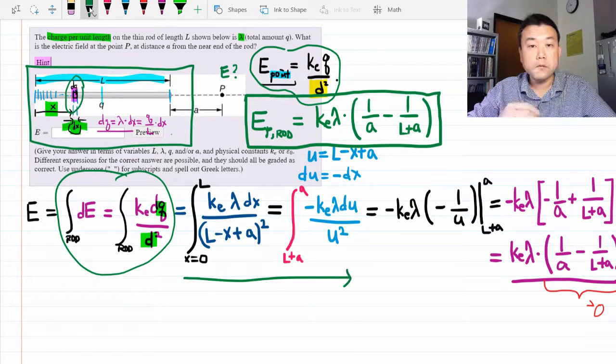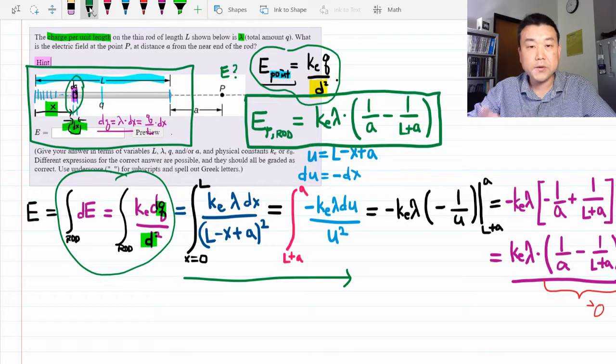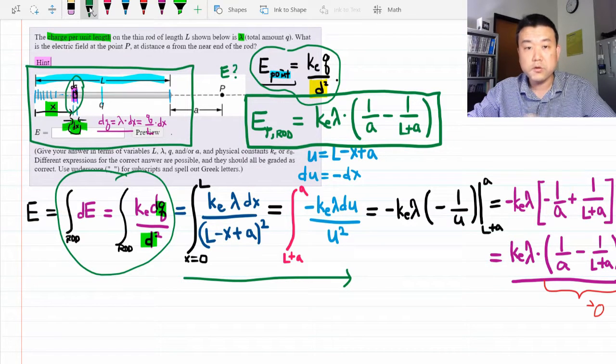of taking a charge distribution, breaking it up into tiny little pieces where you can apply Coulomb's law and setting up the integral and actually carrying out the integral. For this lower division class, if you can do this for one dimensional cases, you are in good shape.